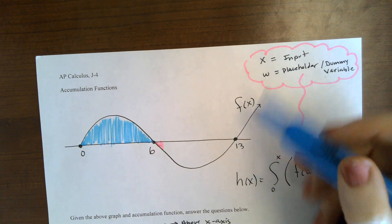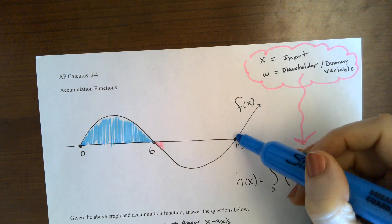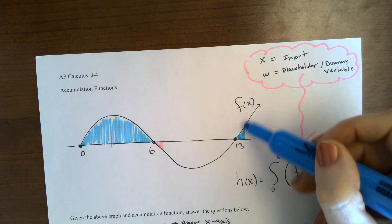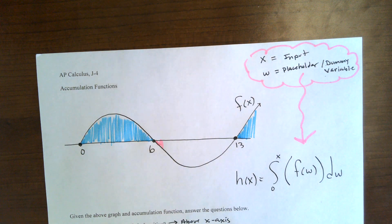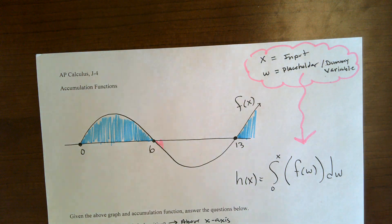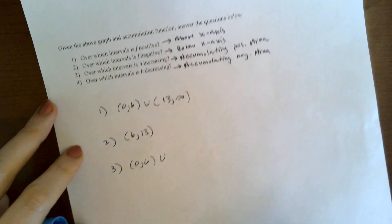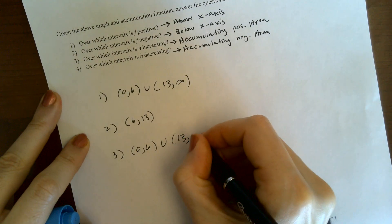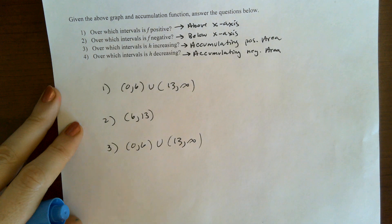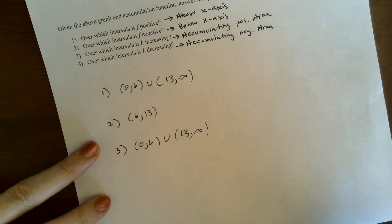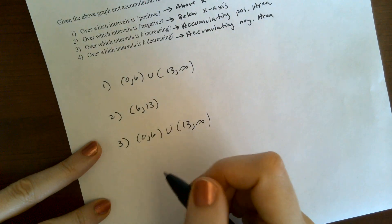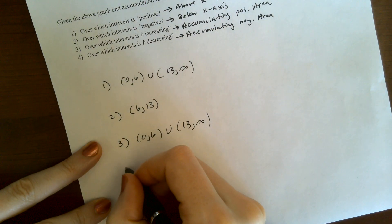At 13, we start accumulating more positive area. So from 13 to infinity, we're accumulating positive area, so h is increasing.